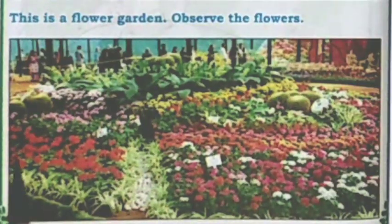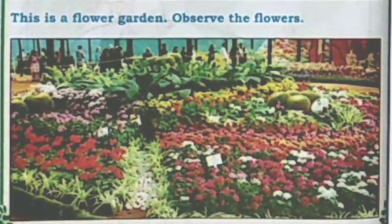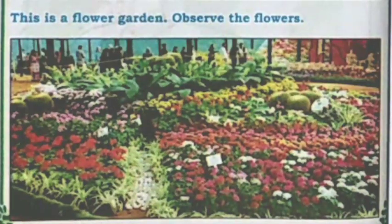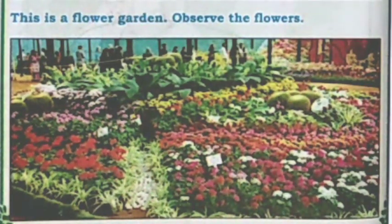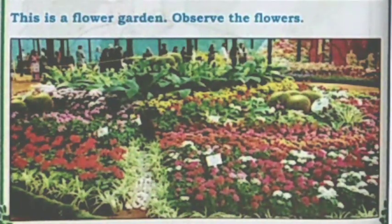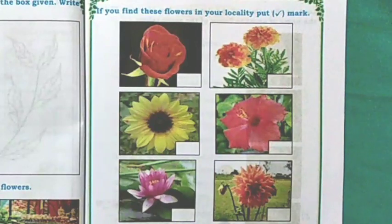This is a flower garden. Observe the flowers. In this flower garden there are roses, daisies, lilies, marigold, daffodils, jasmines, chambas, and many more varieties of flowers. If you have seen these flowers, put a tick mark.